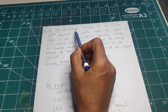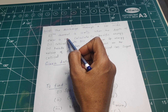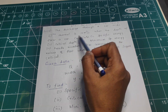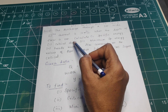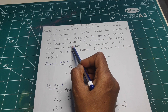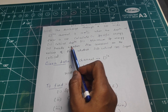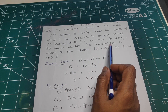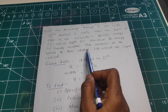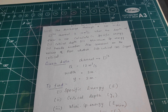The discharge through a 3 meter wide rectangular channel is 12 meter cube per second. When the depth of flow is 2 meter, calculate the specific energy, critical depth, minimum specific energy, and Froude number. Also comment on the nature of the flow — whether subcritical or supercritical.